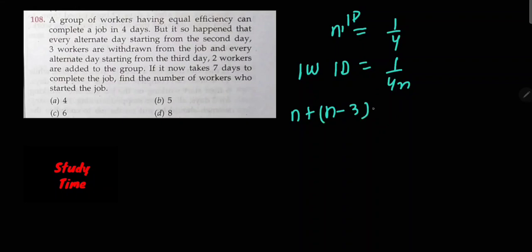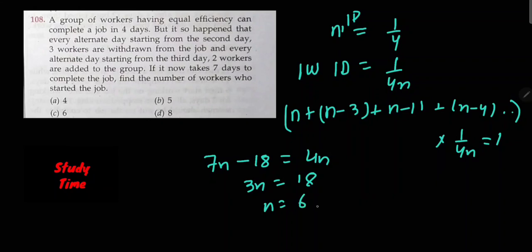The total work done equals 1. Setting up the equation: n plus n minus 3 plus n minus 1 over 4n equals 1. This gives us 3n minus 4 equals 4n. Solving: 3n equals 4, so n equals... wait, 3n equals 18, so n equals 6. Therefore, 6 workers started the job.